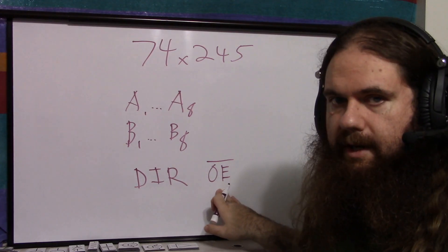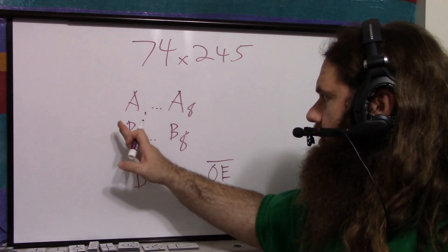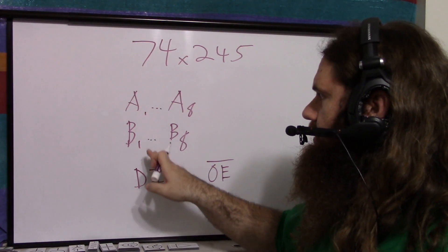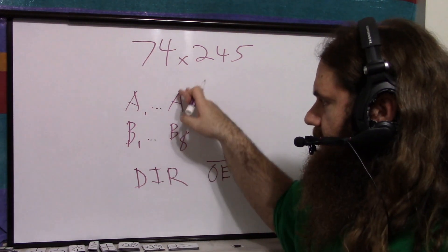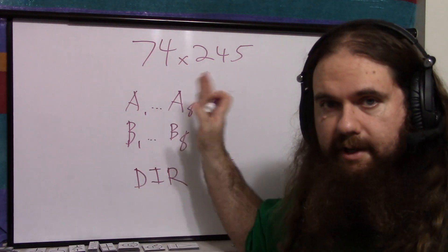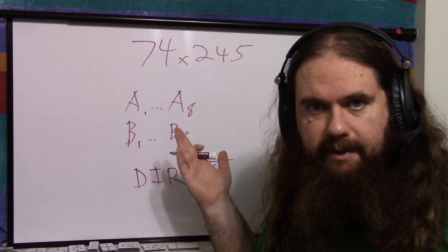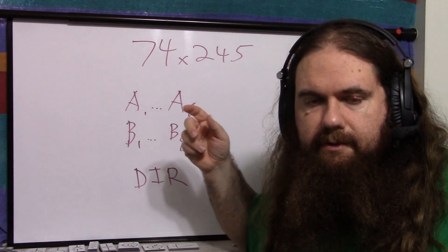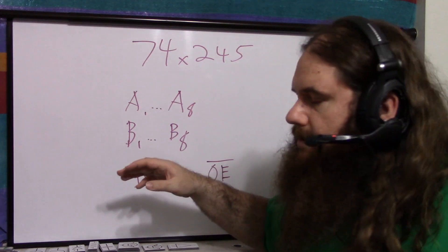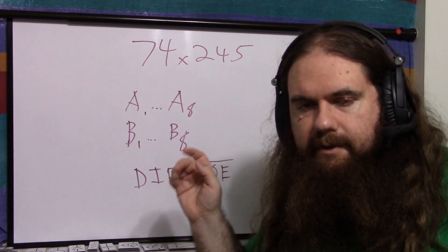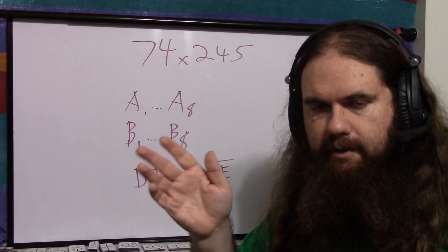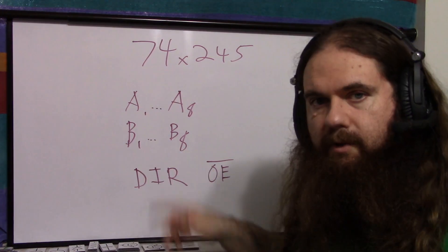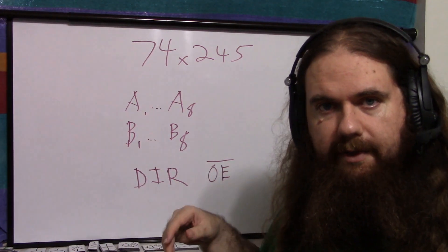If output enable is low, the chip is on. The direction pin — it's in the datasheet — determines which side is the output: one side will be driven while the other is high impedance, and vice versa. It's a buffer, so the signal is not simply let through — it's not an analog switch or even a digital switch. The chip powers the output signal, so it's safe to connect whatever digital signal from whatever source to the other side.